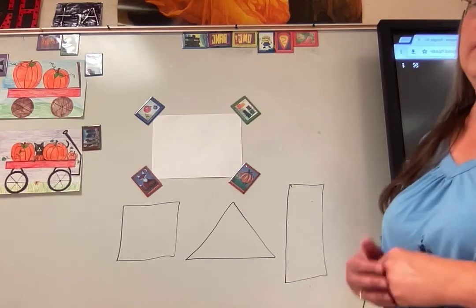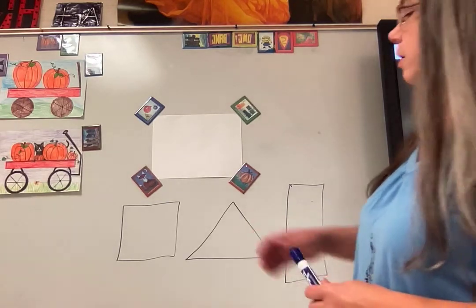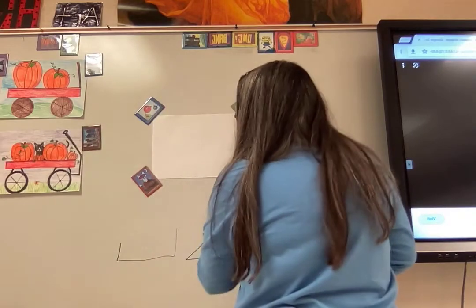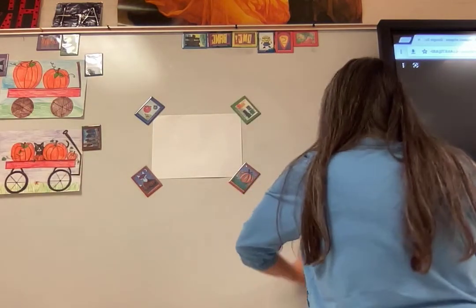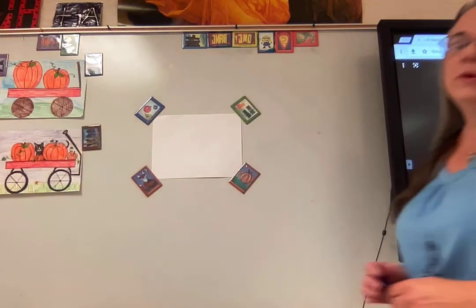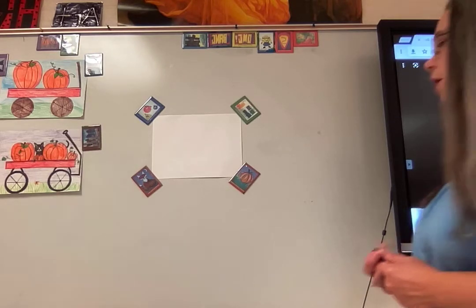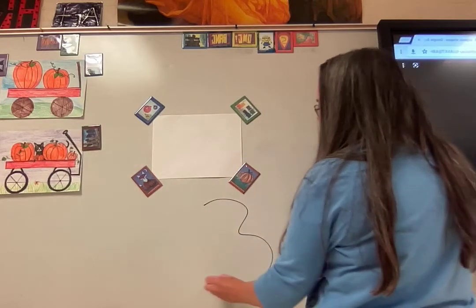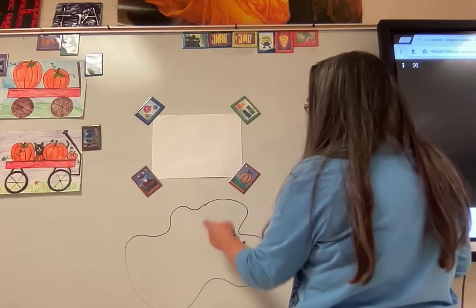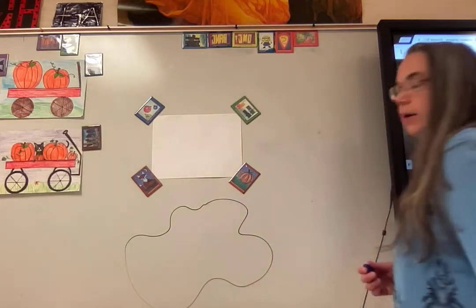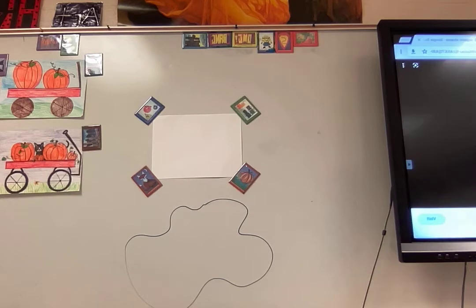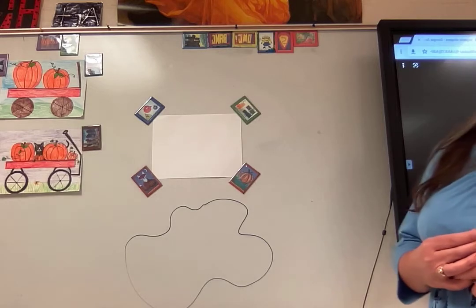Those are some of the geometric shapes we'll be using in our drawing of a wagon full of pumpkins — I said that backwards, that was silly. But then there are some shapes, especially those found in nature, that are not geometric. They don't always look the same — they can change, grow, or move, and they don't have specific names like circle, oval, square, and triangle. They are still shapes because a line goes all the way around a space and encloses it inside.